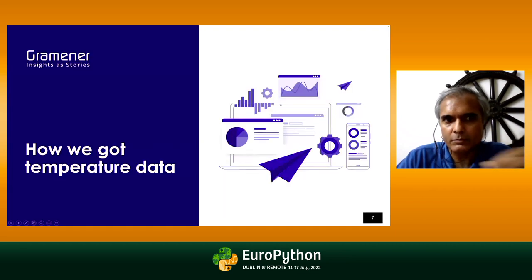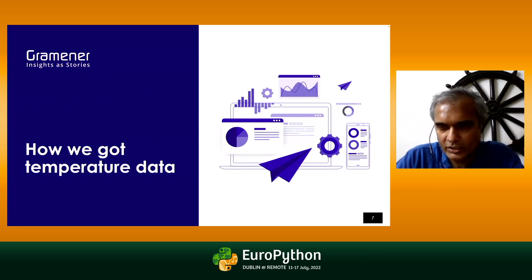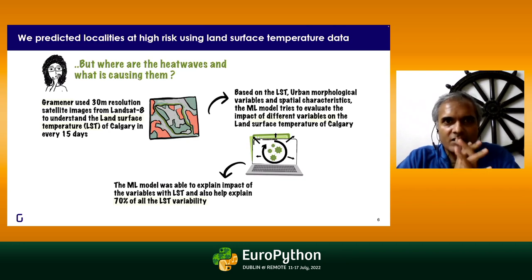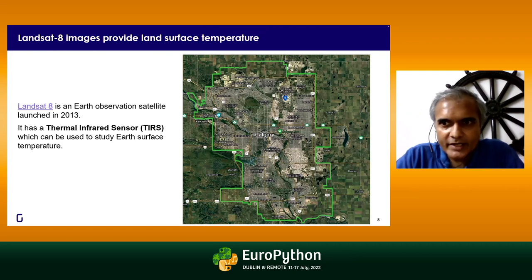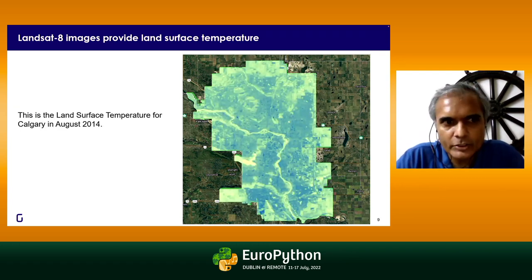This talk is about how we went about doing that. First, I'll explain the data we used. Landsat 8 provides land surface temperature across the globe every 15 days via a thermal infrared sensor. This can map temperature at a fine level — 100 meters by 100 meters — for any particular region.